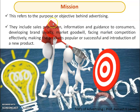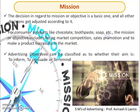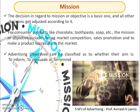The second M is Mission — that is, what is the purpose and objective of advertising? Why are you doing the advertising? This may include sales promotion, information and guidance to the customer, developing a brand, creating market goodwill, facing market competition, or introducing a new product. The mission decision is a basic one, and all other decisions adjust according to it. For consumer products like chocolate, toothpaste, and soap, the mission includes facing marketing competition, sales promotion, and making the product successful. Advertising objectives may be classified as whether you want to inform, persuade, or remind.